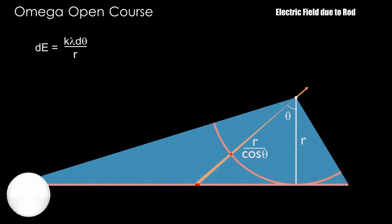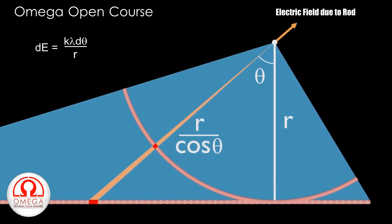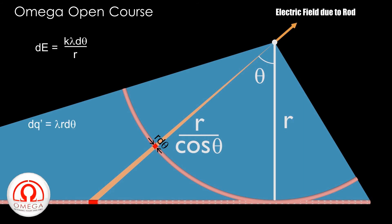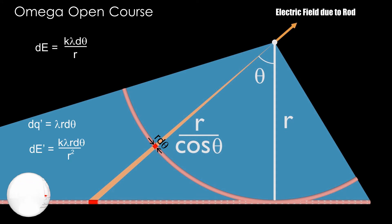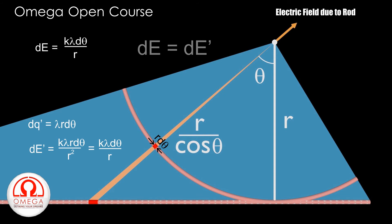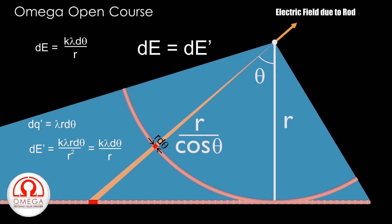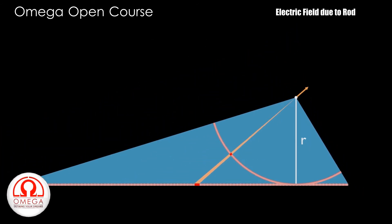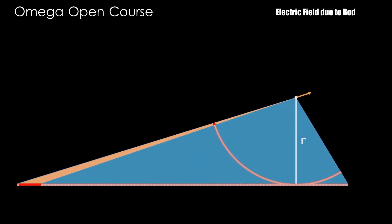Take an infinitesimally small part of this arc which also lies at an angle theta and subtends angle d-theta at the center. Since this part is at a distance R from the center, its length is R·d-theta and the charge on it is lambda·R·d-theta. The electric field due to this element is K·lambda·R·d-theta divided by R², which equals K·lambda·d-theta divided by R. So, the magnitude as well as the direction of the electric field due to the small part of the arc equals that due to the small part of the rod. For each part on the rod, there lies a corresponding part on the arc which produces the same electric field.